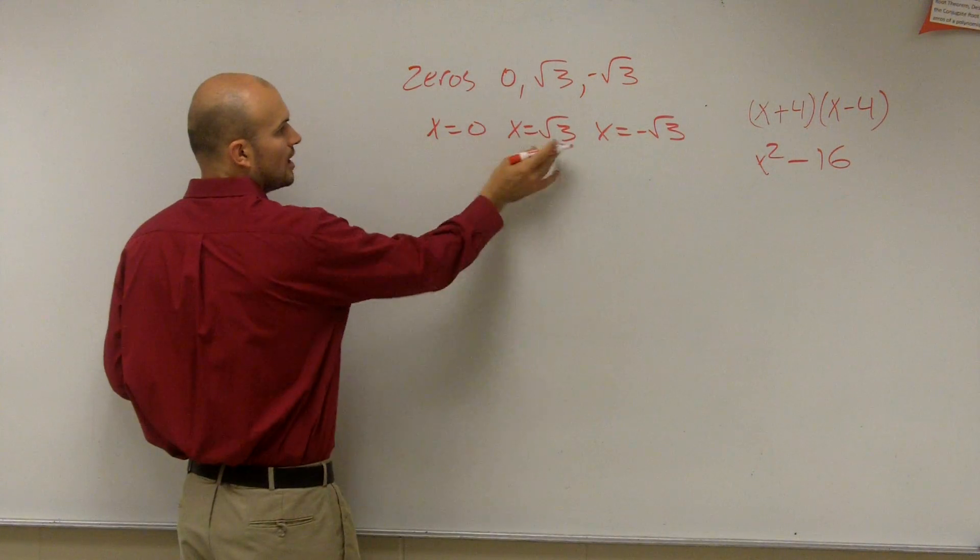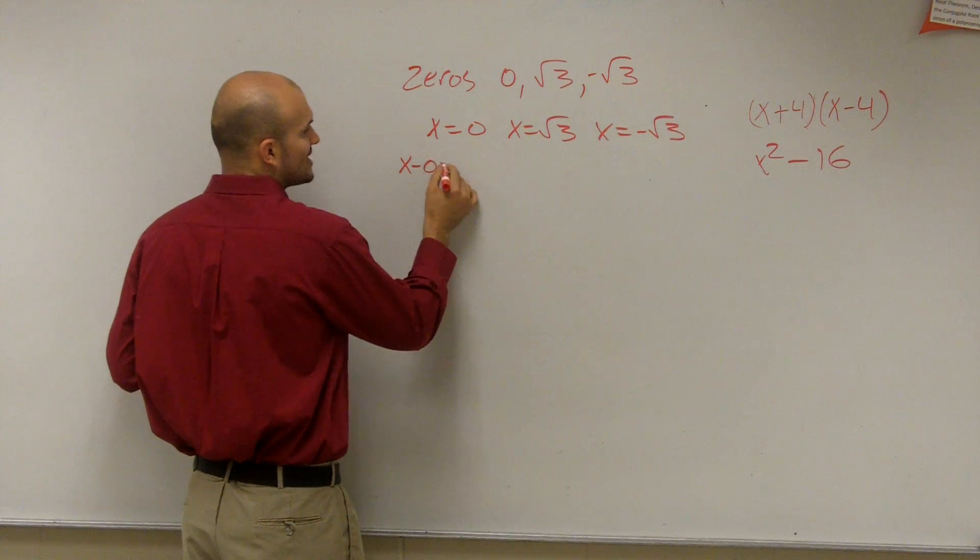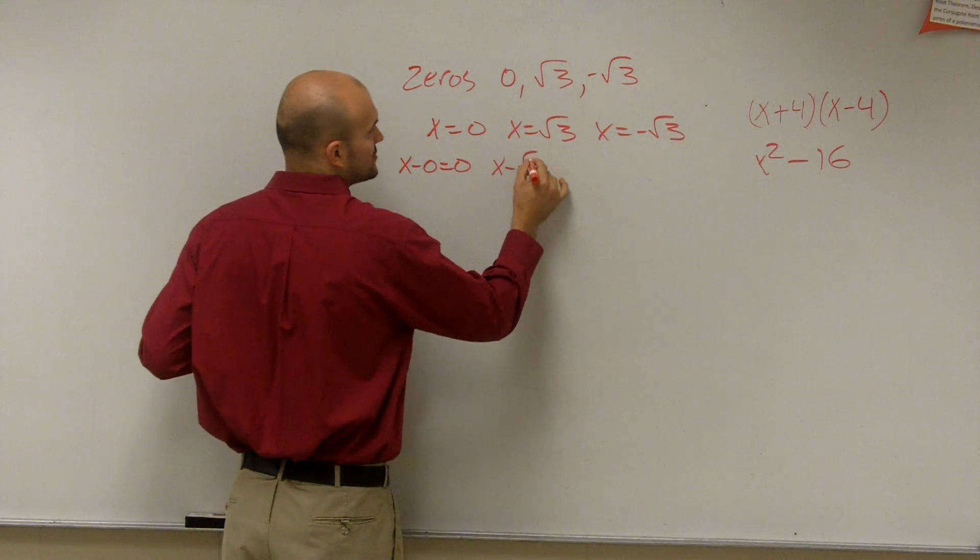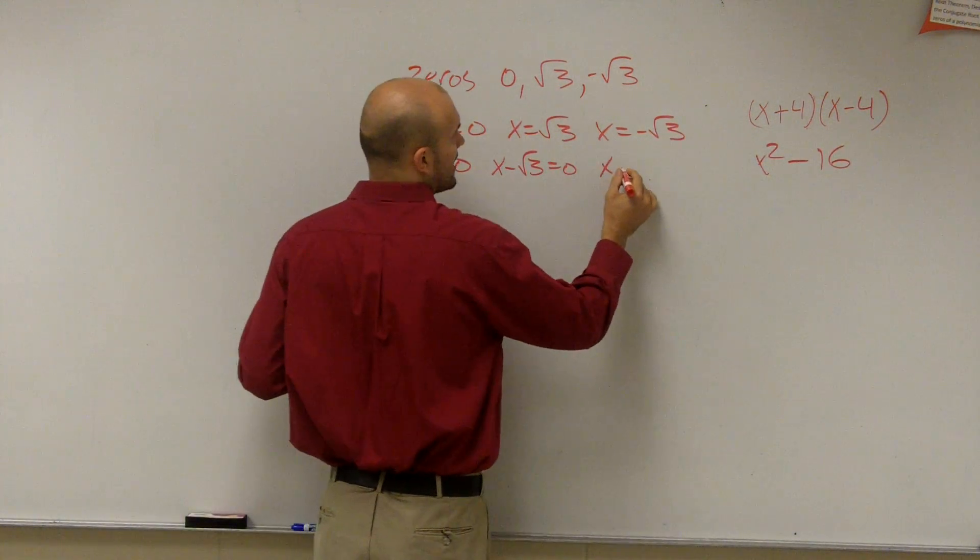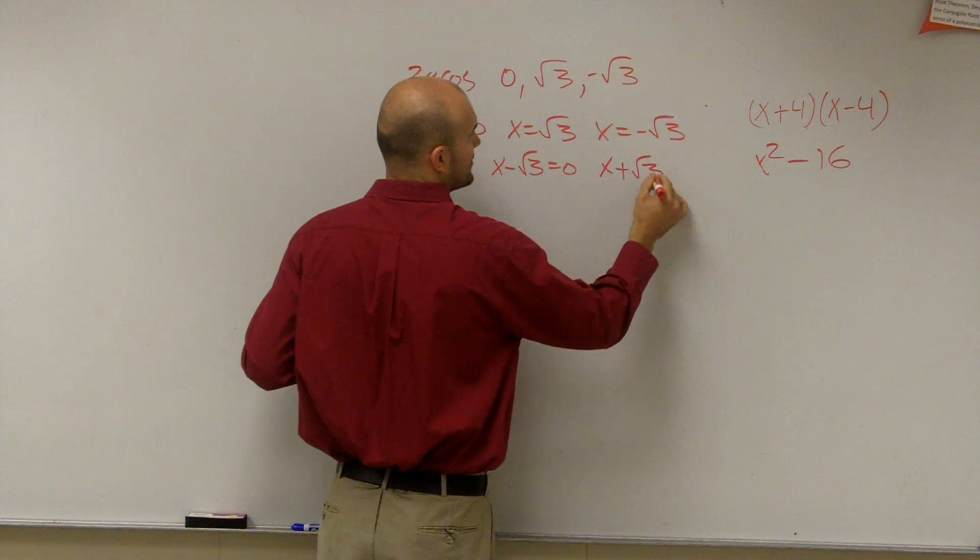Now set them all equal to 0. x minus 0 equals 0, x minus square root of 3 equals 0, x plus square root of 3 equals 0.